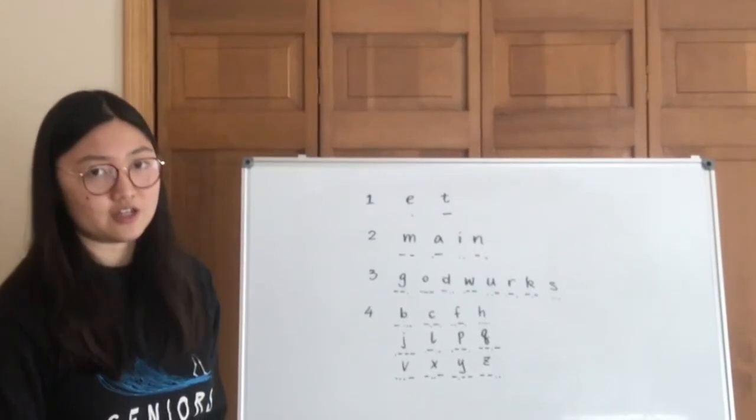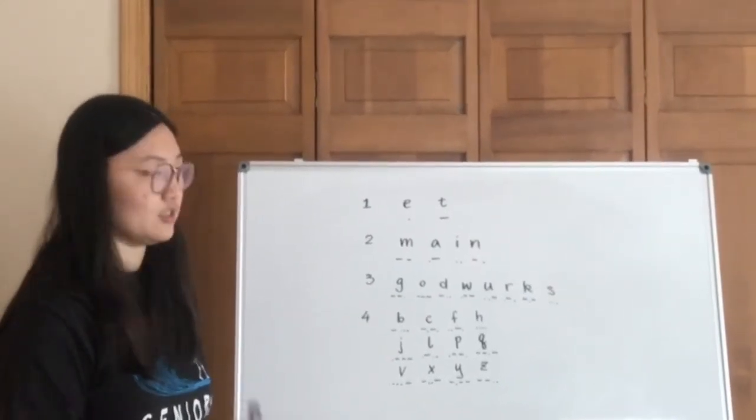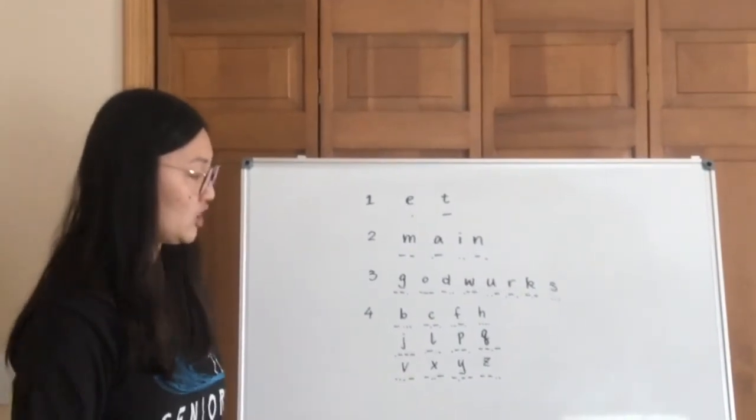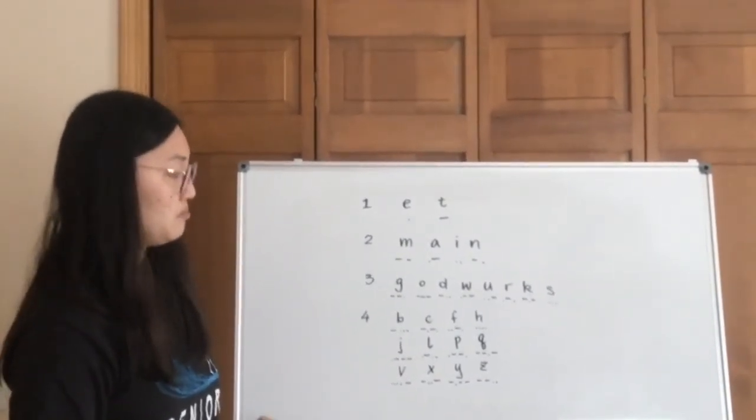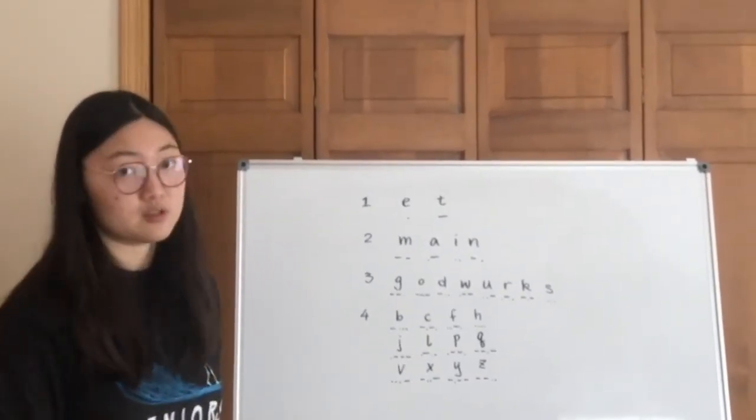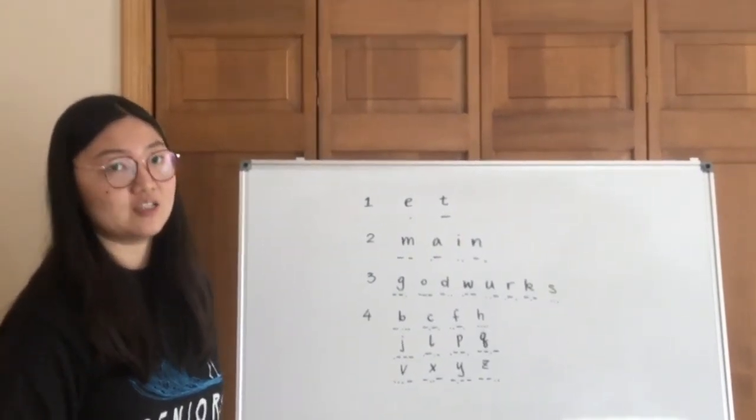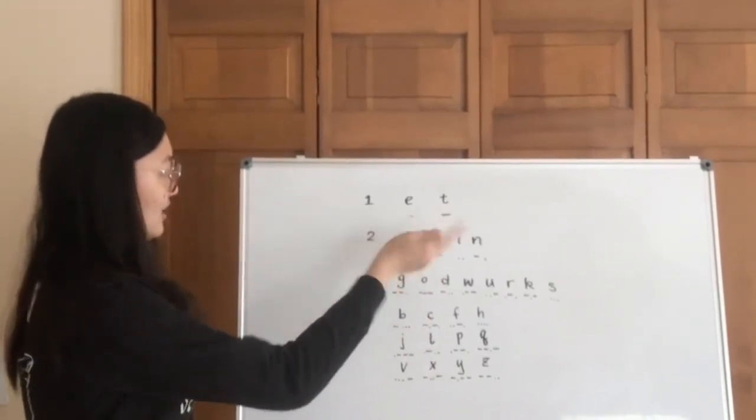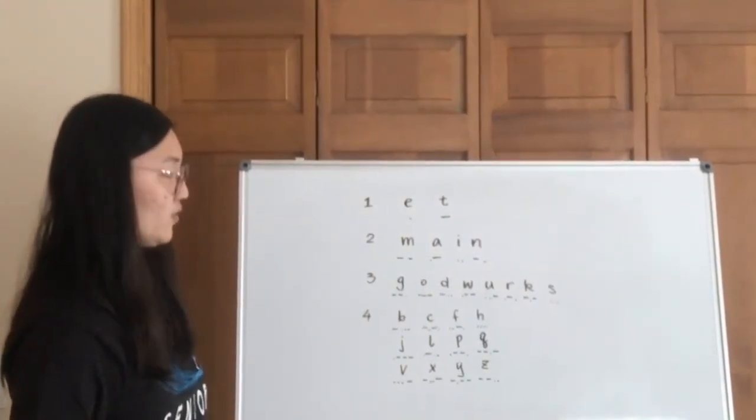So the most frequently used letters are going to have to be mapped onto the shortest and vice versa. The longer lengths of the Morse codes will be for the letters that are less frequently used. So in this case, D, E and T are going to hold the positions of the onesies.